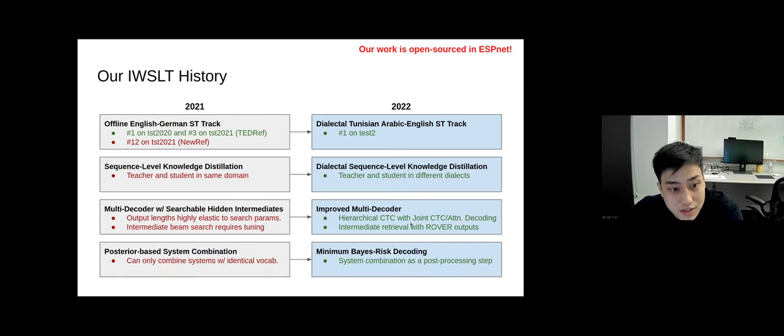Finally, last year we found that posterior-based system combinations are very effective, but we're unsatisfied with the fact that we could only combine systems with identical vocabularies. So this year we've introduced a technique using minimum Bayes-risk decoding to do system combination for speech translation models as a post-processing step, which is independent of the normal autoregressive search procedure. I just wanted to state that all of our work is available open source in ESPNet, so please check it out if you're interested.